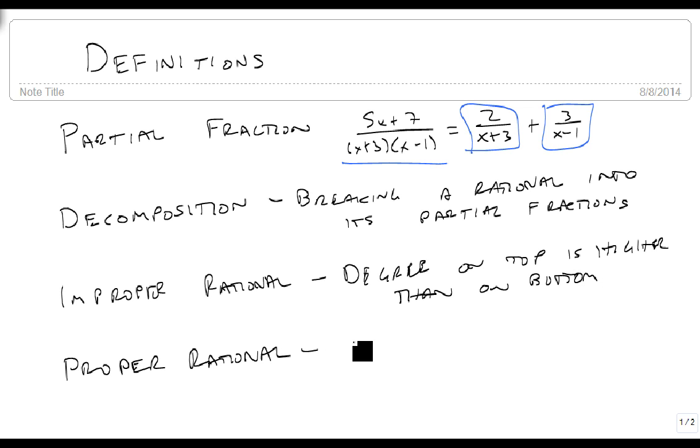A proper rational is when the degree on the top is the same or lower than on bottom.